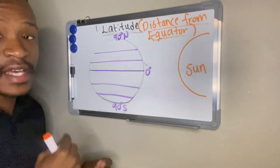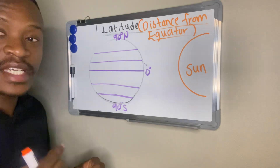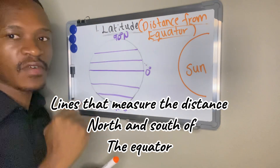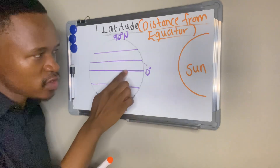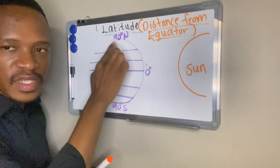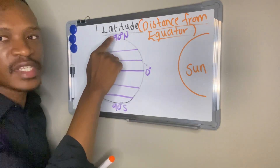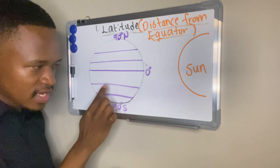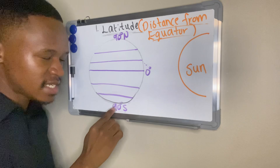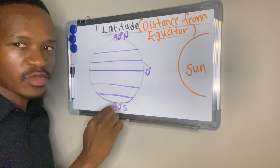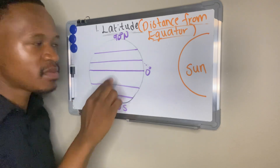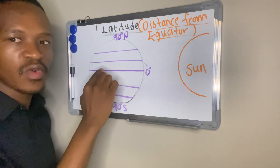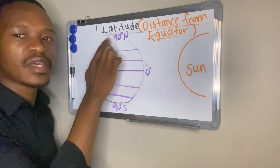Lines of latitude are lines which measure the distance north and south of the equator. North of the equator, we have lines of latitude going up until our north pole, which is 90 degrees north. South of the equator, we have lines of latitude going up until 90 degrees south, our south pole.